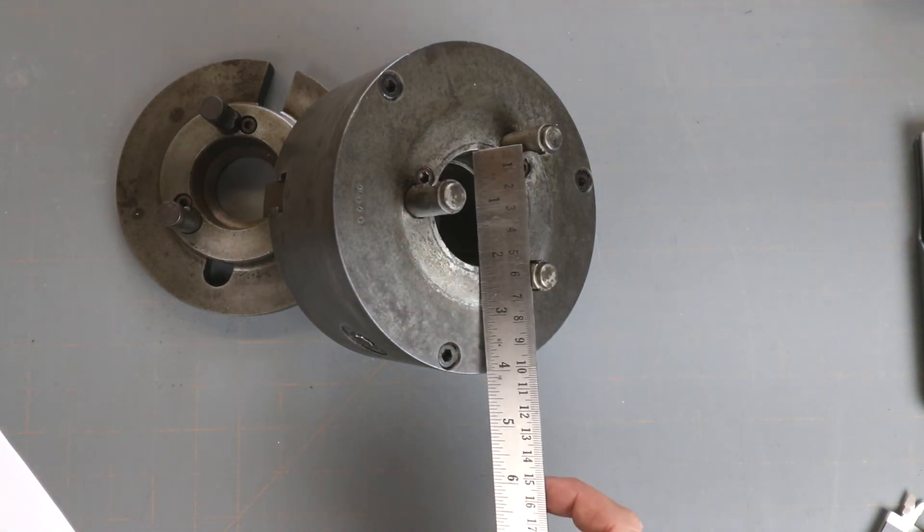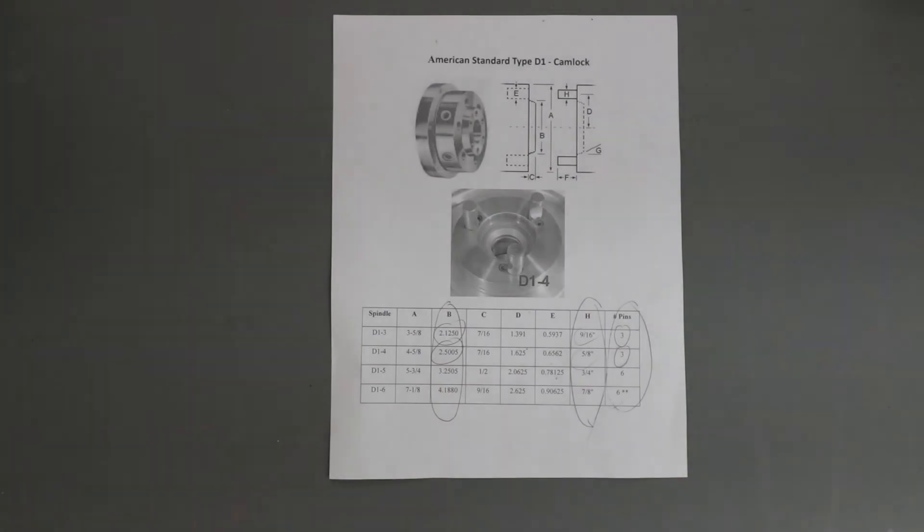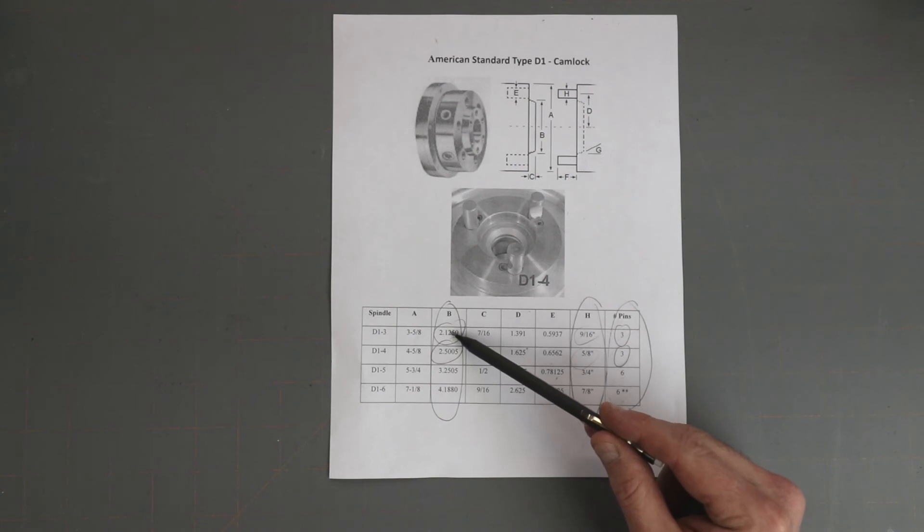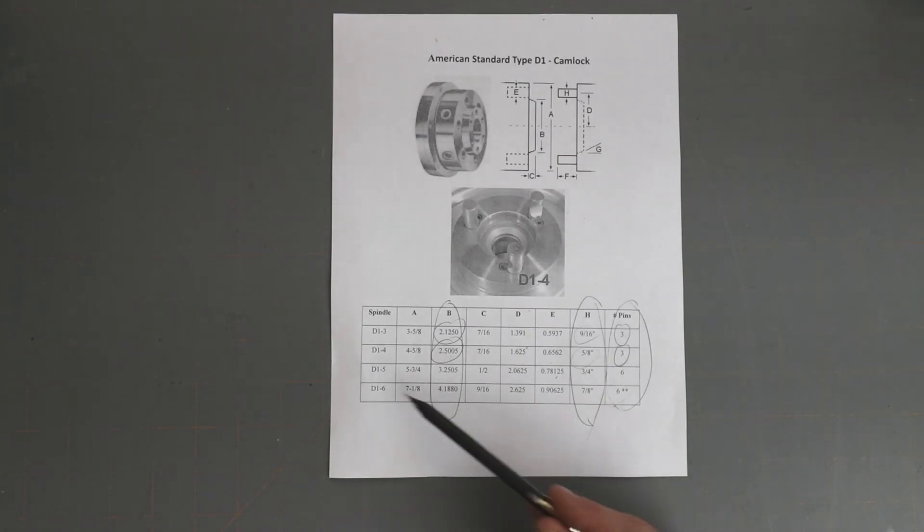That hole size would be about 2 and a half inches for a D1-4. This printout indicates clearly the difference - measurement B at 2 and 1/8, 2.5. A D1-5 is actually 3.25 and a D1-6 is 4.1. You would know if you had a D1-5 or 6 because they have six pins.